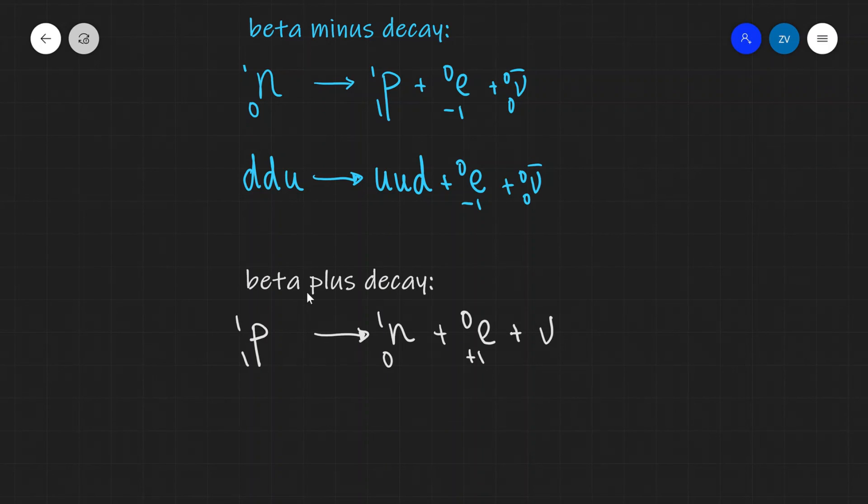A beta plus particle, you might sometimes hear this referred to in a problem or in textbooks, and what they mean is simply a positron. And a beta minus particle is simply an electron.